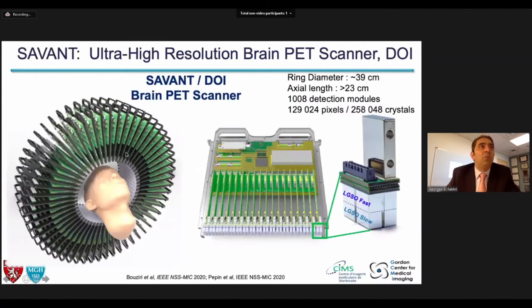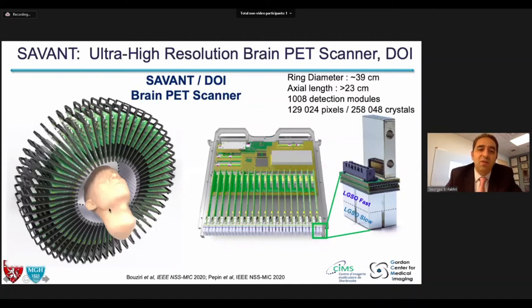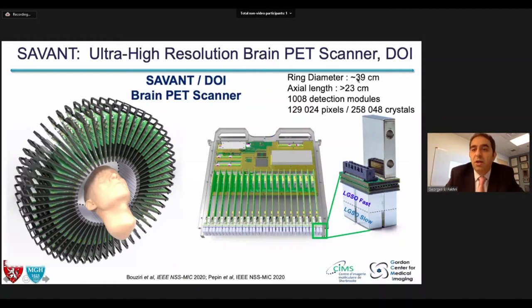Here's the SAVANT brain scanner that we are building under this Brain Initiative effort. This scanner will have about a 40-centimeter bore with space for the brain and a 23-centimeter axial field of view, comfortably covering the entire brain with a favorable sensitivity profile. It has about 258,000 crystals — more than a regular whole-body scanner — because although this is a 30-centimeter bore rather than a 79-centimeter bore, the crystals are one millimeter by one millimeter by 15 millimeters; that's how you achieve one-millimeter resolution. To preserve that resolution, we measure depth of interaction using two crystals — a fast and a slow LGSO — that tell us whether the interaction happens at the front or back end.